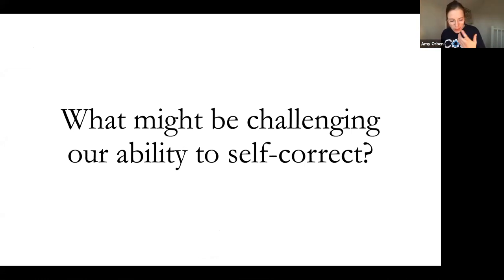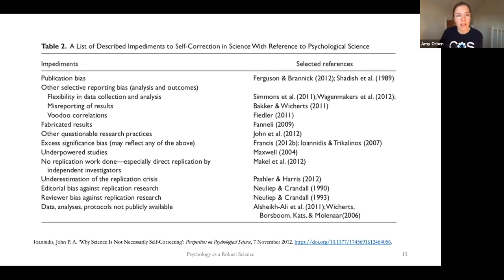However, I think probably in your course you've already covered a lot of things that might be really challenging our ability to self-correct. And we shouldn't just assume that self-correction is just a thing that happens. For example, you have publication bias, people fabricate results, we have underpowered studies. Can science self-correct if data is unavailable, if we cannot check results, if there is biases in the publication process?